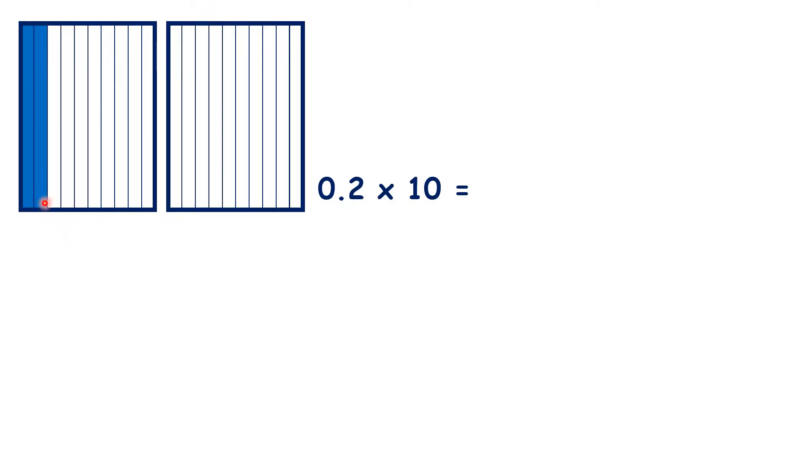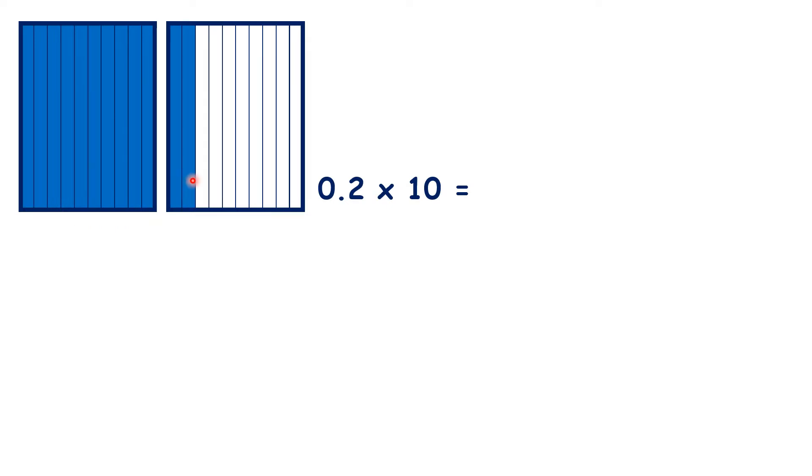So there's 0.2, 0.4, 0.6, 0.8, 1 whole, 1.2, 1.4, 1.6, 1.8, and now with 10 times we have 2 wholes. So that's why 0.2 times 10 is 2.